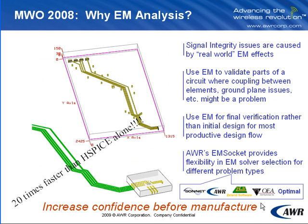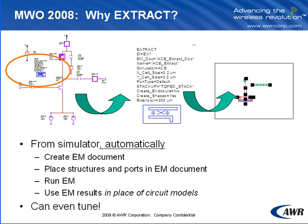For EM analysis, AWR has something called the EM socket, which allows you to plug in nearly every EM solver available in the industry today. The combination of the EM socket as a gateway to these EM solvers, with the ability to enforce causality and passivity on the data, creates simulations that are up to 20 times faster than just sending data as S-parameters to HSPICE alone — very efficient simulation.